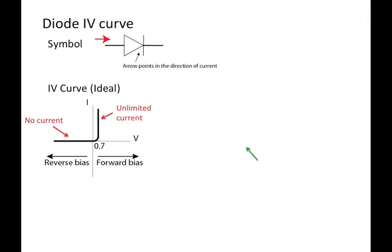So the symbol for a diode is essentially just a triangle with a line. The arrow of this triangle points in the direction of current flowing in the forward bias direction. And so here's what the IV curve looks like. You can see that it's non-ohmic. The current and potential are not linearly related.